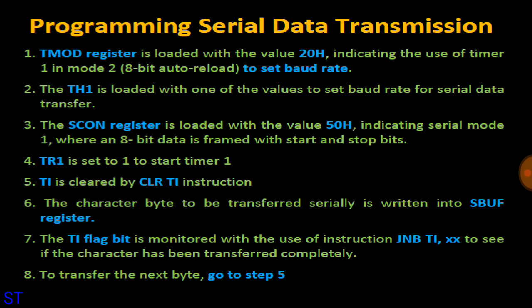Step 3: The SCON register is loaded with the value 50H. Moving 50H to the SCON register sets serial Mode 1, where an 8-bit frame is formed with a start bit and a stop bit — a total of 10 bits transmitted in Mode 1.